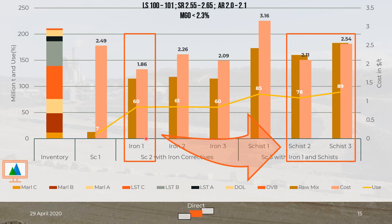So to improve the use of the deposit further, we decided together with the management of the cement plant to assess three external sources of schists, which also had different qualities and costs. The best solution is then up to the management — prioritizing lifetime or cost. But at least you get a transparent picture, which can help you decide which way to go.